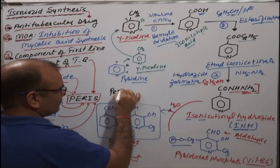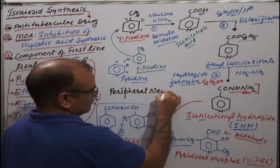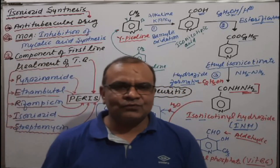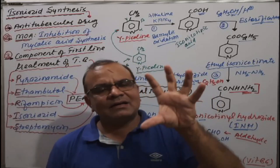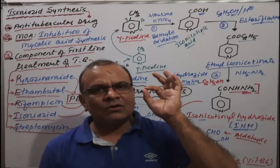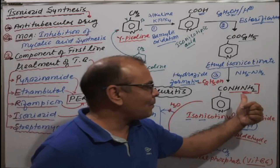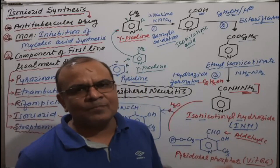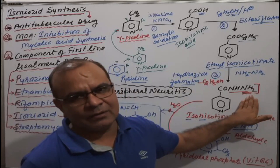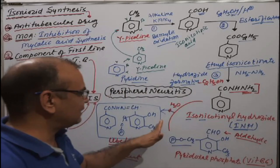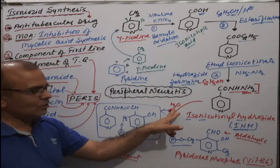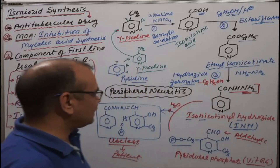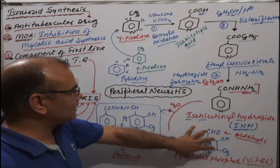The side effect of this vitamin B6 deficiency is peripheral neuritis — numbness in the feet and legs. Isoniazid reacts with pyridoxal phosphate (which has an aldehyde group) via nucleophilic addition and removal of water, forming a useless complex that is excreted in urine, resulting in vitamin B6 deficiency and peripheral neuritis.